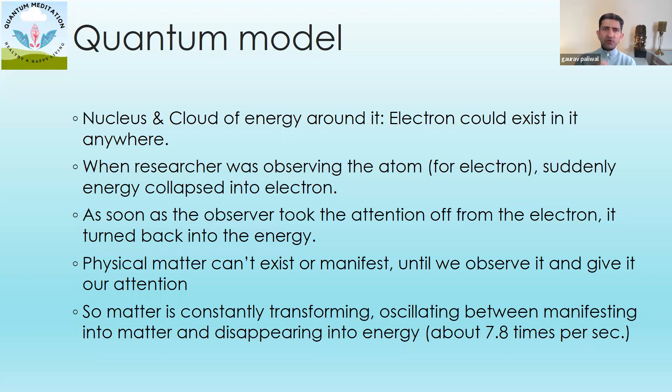Now, when researchers were observing, they observed that whenever you observe, the electron comes in the physical form. Otherwise, it goes back to energy form. If we really see from the perspective of the sheer size, if we consider the nucleus as the size of an SUV, that means the electron could be anywhere, say in the state of Arizona in the U.S.